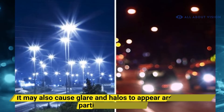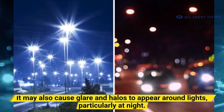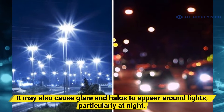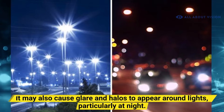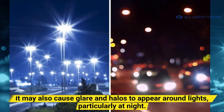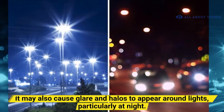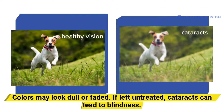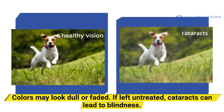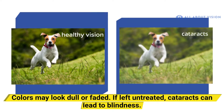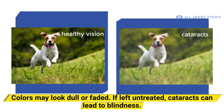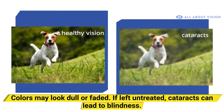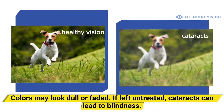It may also cause glare and halos to appear around lights, particularly at night. Colors may look dull or faded. If left untreated, cataracts can lead to blindness.